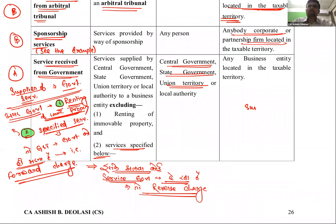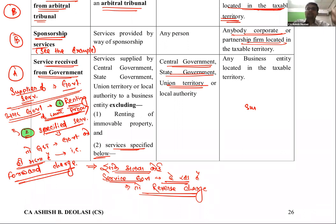चौथी service — sponsorship service। इसमें supplier और recipient को identify करना ज़रूरी है। जो payment करता है वो recipient होता है, और जिसे पैसा मिलता है वो supplier। Example: AD Classes ने IPL में अपनी ad लगाई — IPL sponsorship की service दे रहा है। AD Classes पैसा दे रही है IPL को, इसलिए AD Classes recipient है और IPL supplier।